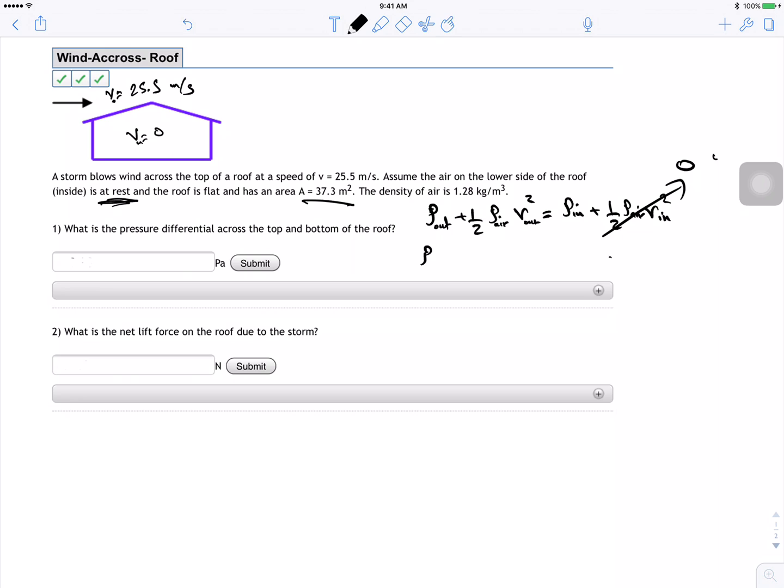And to find the differential, P out minus P in is going to equal negative half rho air V out squared. It could be negative or positive, it doesn't matter because they're looking at a differential. When you take it to the other side it's going to be negative, then you can give it positive and switch those guys because they're only asking about differential. So for me, it's half times 1.28 times V out 25.5 squared. This got 416.16 Pascal.